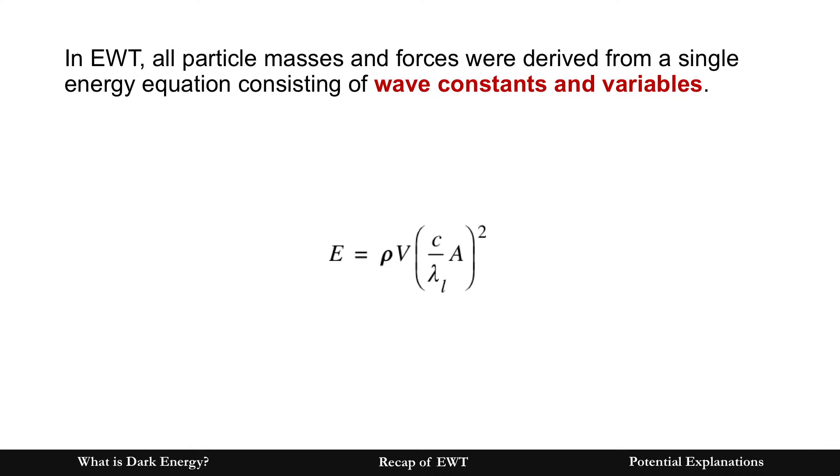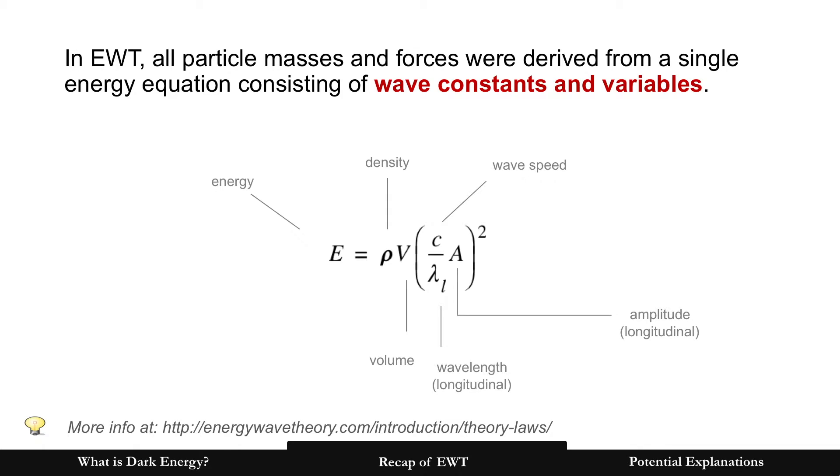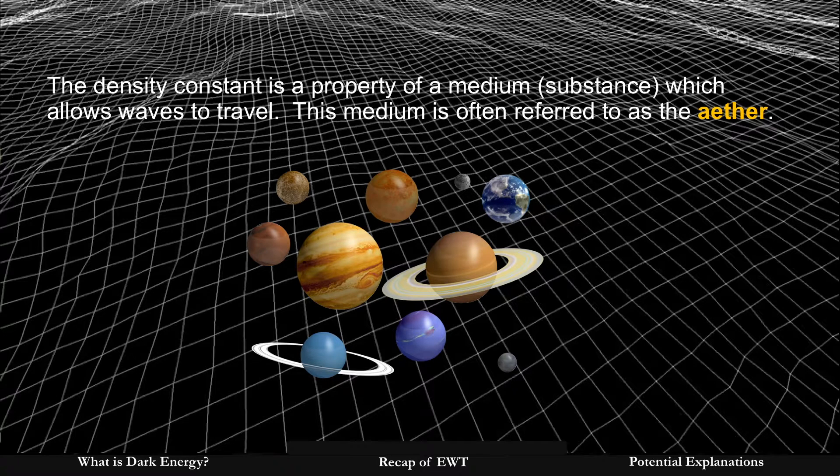Particle masses and forces were derived from a single equation and includes wave constants and variables. Density is the key one here. A density constant is a property of a medium, just like waves that flow through water where water is the medium. In this case, there is a substance in the universe that allows waves to travel. This medium is often referred to as the ether.